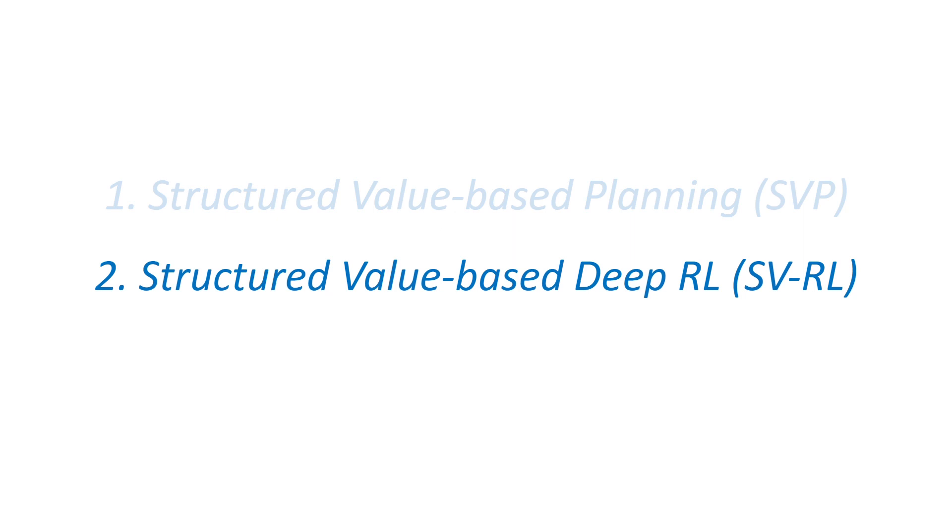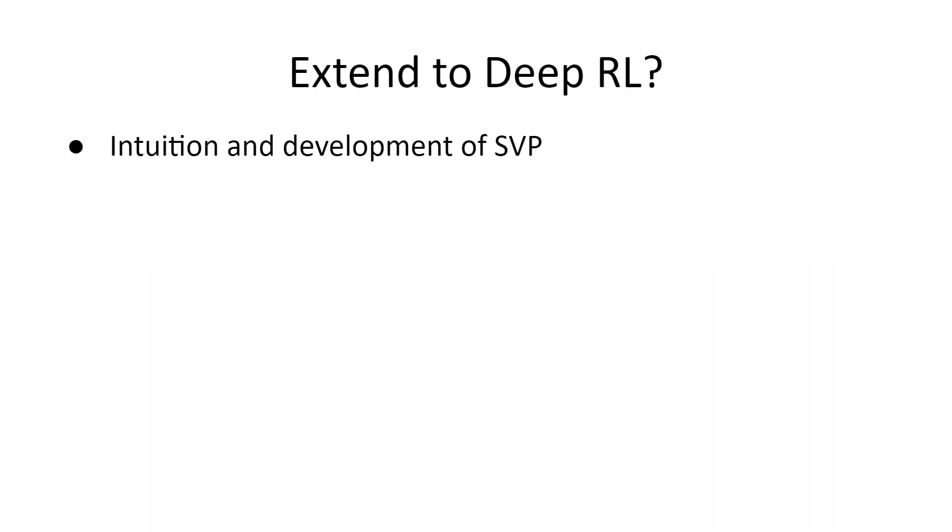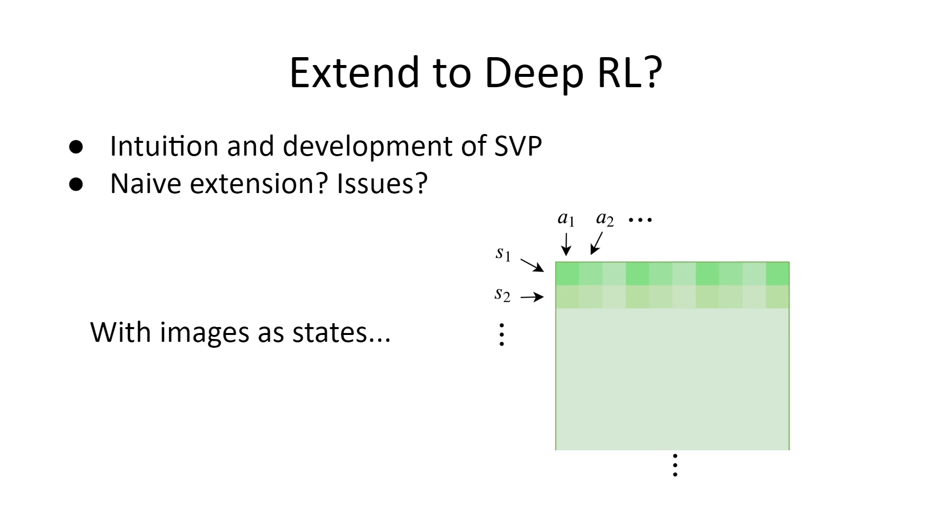With the successful SVP, now we move from planning to deep RL tasks. We would like to extend our intuition to leverage structures in the Q-value for deep RL. First, let us recall the process we took to develop our intuition for SVP. We look at the learning process and verify that the converged Q-value is approximately low rank. Hence, we argue that one should be able to enforce the low rank structures throughout the learning iterations. Can we extend this line of development easily? Are there any issues? Well, yes. In deep RL, with images as states, the state space is basically infinite. This means that if we take our matrix view of Q-value, then the matrix has infinite number of rows, making it impossible to verify the low rank property. So, what can we do?